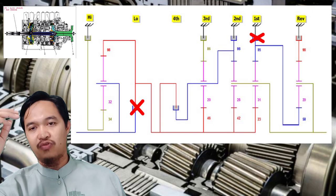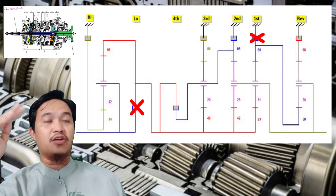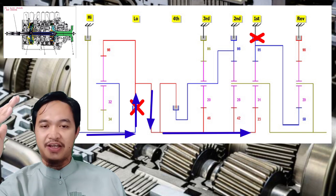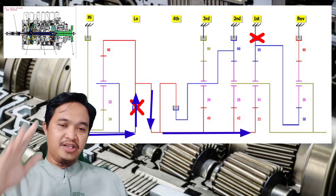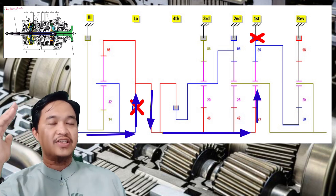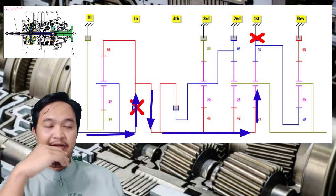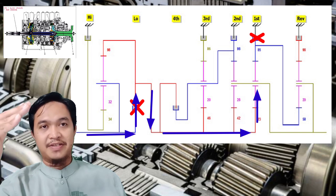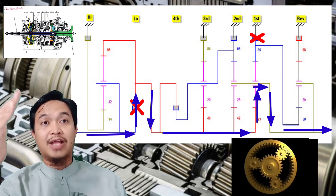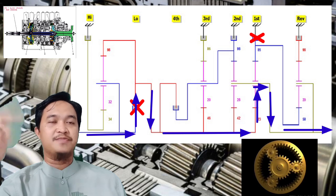Contoh pertama adalah speed 1 maju, yang melibatkan low clutch dan first clutch — keduanya ditahan. Inputnya adalah gear yang terkoneksi dengan carrier, yang terhubung dengan intermediate shaft. Di intermediate shaft ini, sebagai inputnya adalah sun gear, sedangkan ring gear-nya ditahan di first clutch. Sehingga pinion gear berputar mengitari sun gear, dan carrier-nya menjadi output. Carrier yang terhubung dengan output shaft pun ikut berputar searah dengan inputnya — itulah speed 1 maju.